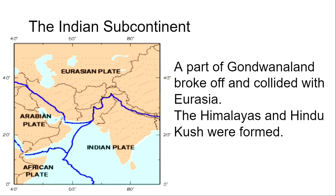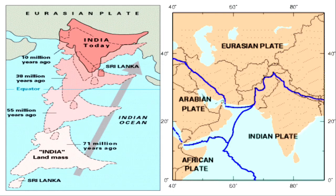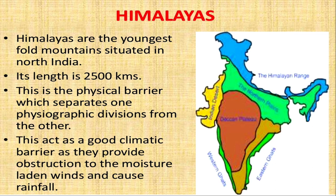This Indian subcontinent — a part of Gondwana land broke off and collided with Eurasia, so the Himalayas and Hindu Kush were formed. The journey of the Indian plate has been shown here, and you can find that 55 million years ago and 10 million years ago, and then present India has been formed. The Eurasian plate was the big plate with which the Indian plate collided, leading to the formation of the Himalayas.